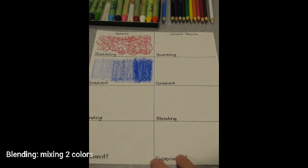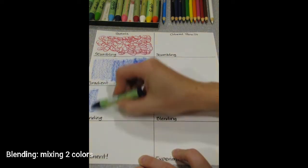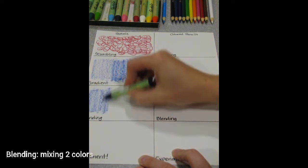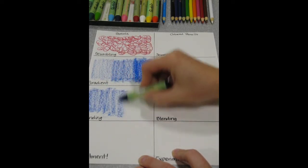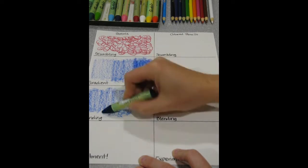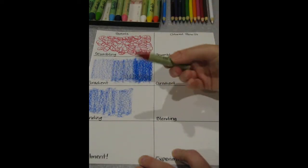Next is blending. So I am going to stick with my color theme here and I am going to use blue and red as my colors. So I am just going to push lightly and cover a little bit over half with my blue. I will then come in with my red.